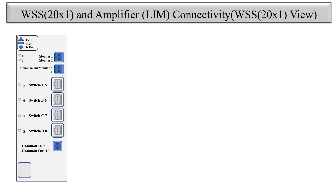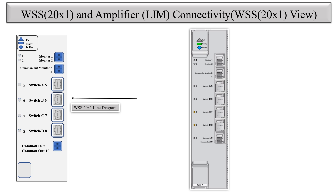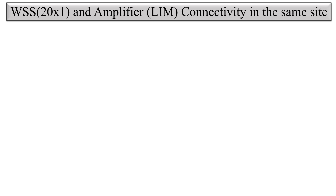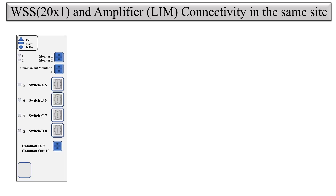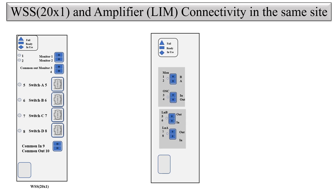This is the WSH20X1 line diagram and this is the physical view. Now let's see how WSH20X1 and limb are physically connected. Port number 7 — line A out — is connected to the common input of the WSH20X1, and the same way the common out port 10 is going to port 6 in, which is line B in.